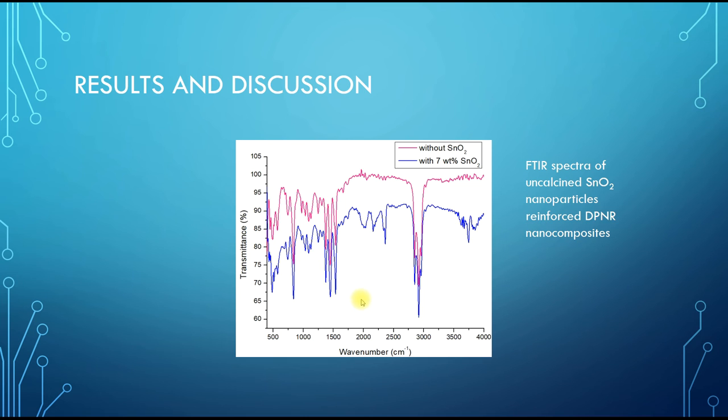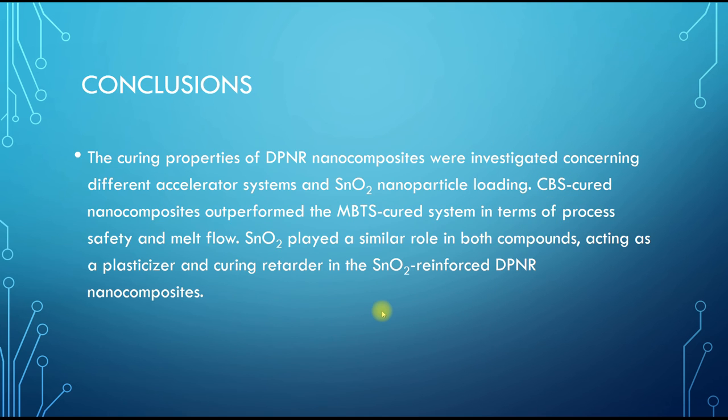Significant bands at 2922, 2841, and 1400 wavenumber on uncalcined tin dioxide surfaces were attributed to carbon-hydrogen stretching and bending vibrations.